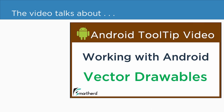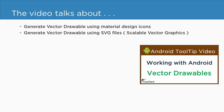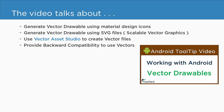In that video, the topics covered are: how to generate vector drawables using material design icons, how to generate vectors using SVG files (that is scalable vector graphics). Thereafter, you will see how to use vector asset studio to create vectors. And in the end, you will learn how to provide backward compatibility to use vectors below API 21, because vectors were introduced in API 21, that is Android Lollipop. So you will learn to use vectors in lower API versions as well.